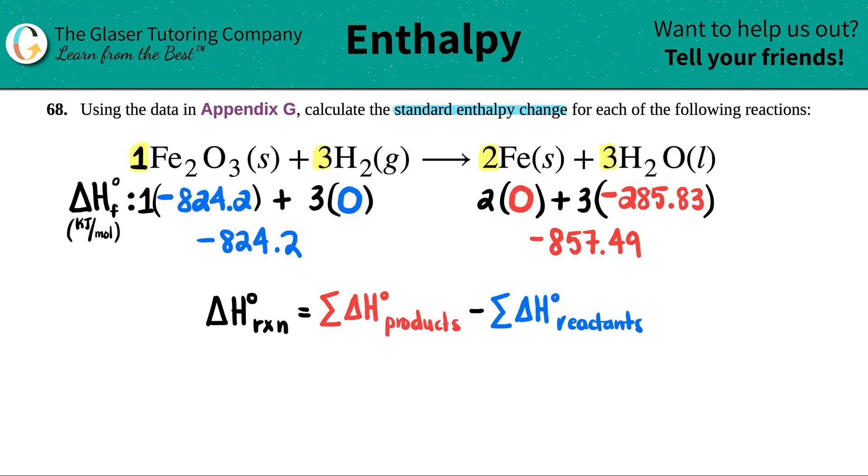Now I have one number for the left and the right side, so now I'm ready to do my formula. The sum of the products would be negative 857.49 minus the sum of the reactants, which is a negative 824.2. Remember, keep change change. When you're minusing a negative, it's really a plus. So delta H would be negative 857.49 plus 824.2. I just want to make sure I have the right numbers in my calculator, and we are good to go. This is negative 33.27. And units for delta H is always kilojoules per mole.